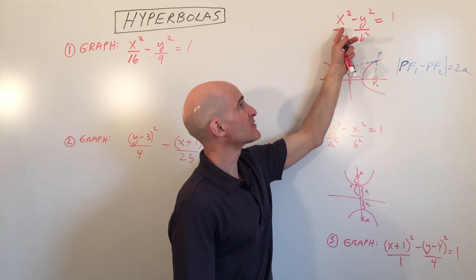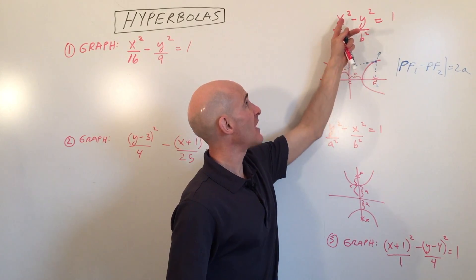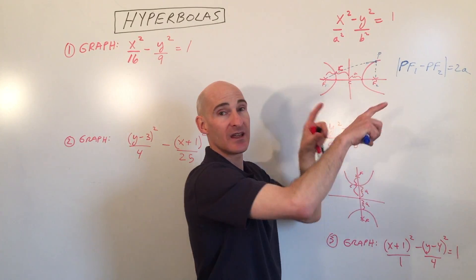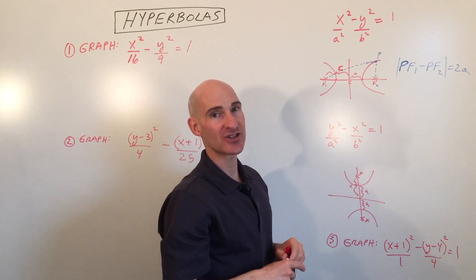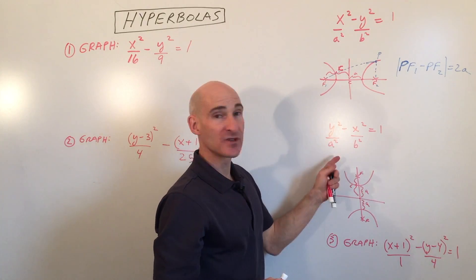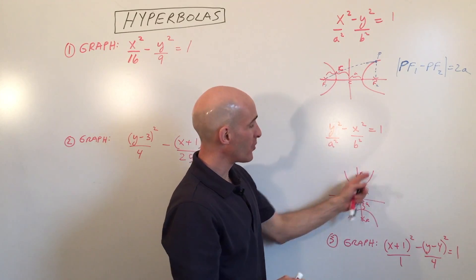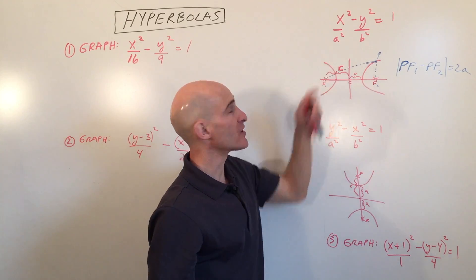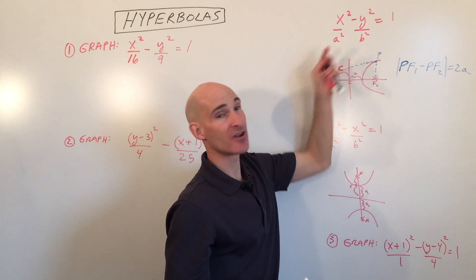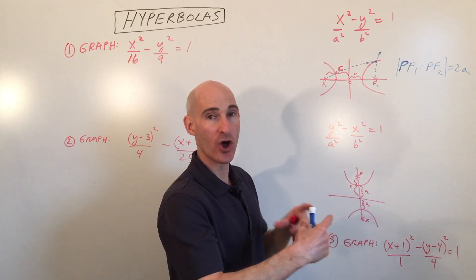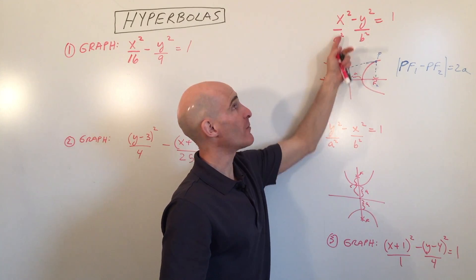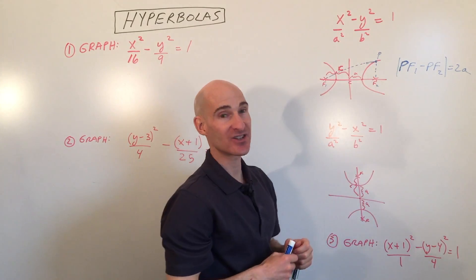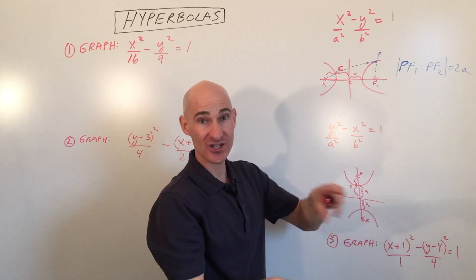Whichever term comes first — if the x-squared term is the positive term, that tells you the graph is going to open in the x direction, the horizontal direction. But if the y-squared term is positive, that tells you it's going to open in the y direction, the vertical direction. So that's an important difference. With ellipses, we were concerned with which denominator was larger — that told us which was the longer axis. With hyperbolas, we're interested in which one is the positive term: x-squared positive means it opens along the x direction; y-squared positive means it opens up and down.